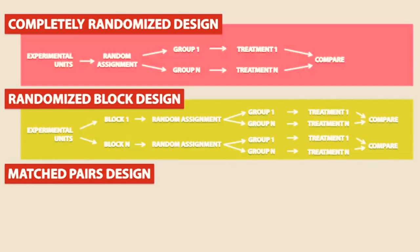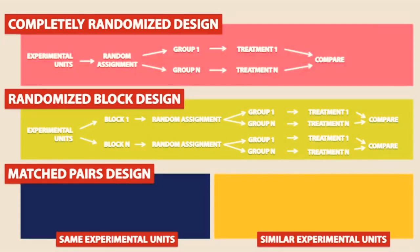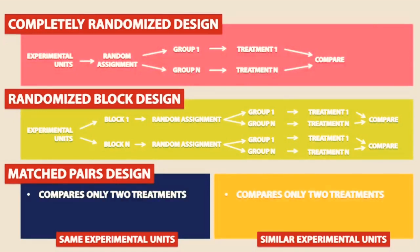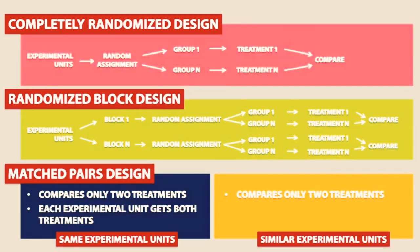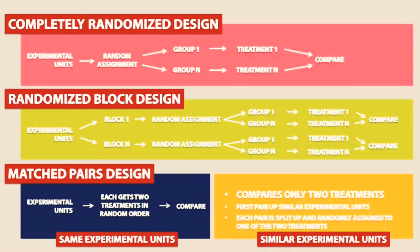Block N means you can have any number of blocks. For a matched pairs design, there are two scenarios. One uses the same experimental units — each experimental unit gets both treatments. The other uses similar experimental units — we first pair up similar units, then each pair is split up and randomly assigned to one of two treatments. Both scenarios involve the comparison of only two treatments.